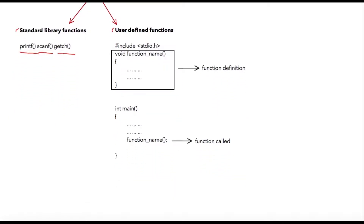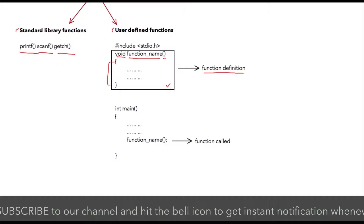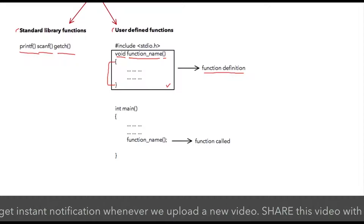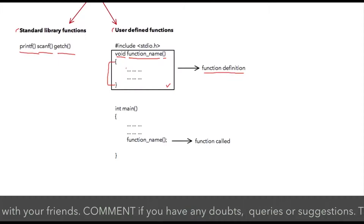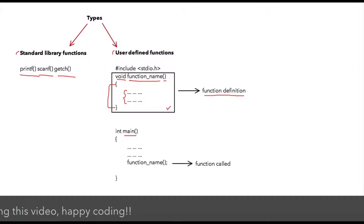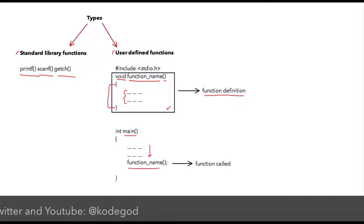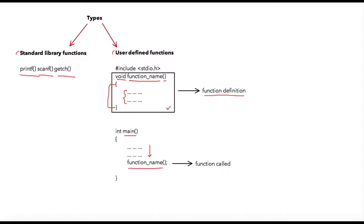Let us check how user-defined functions can be used. Consider this block of code — this is your function definition, which is where you define your function. The usual syntax is: return data type, then your function name, and parentheses. The starting and ending curly braces denote the start and end of your function. Inside the curly braces you have the instructions to be executed. Then in continuation you have your main function, and inside the main function you can write your regular instructions.